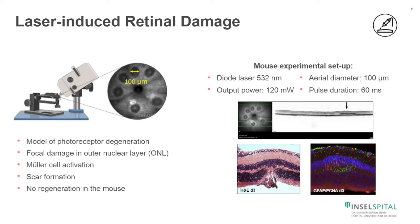When you look in the OCT image, there is a focal damage to the outer nuclear layer, which can also be seen when you stain this with H&E. That focal damage induces Müller cell activation, which you can see with GFAP-positive stained Müller cells.